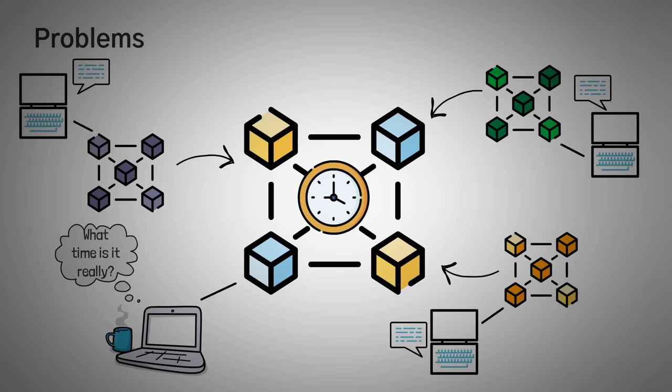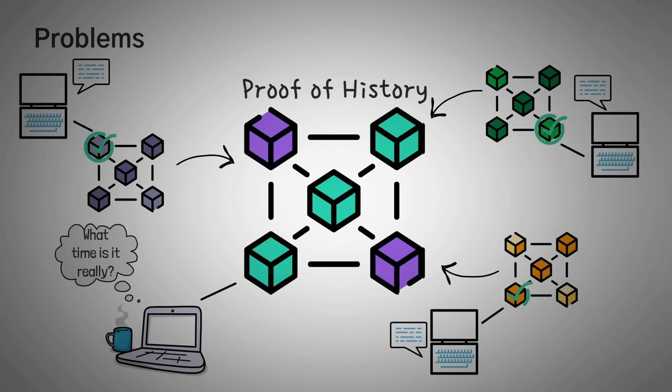Solana fixes this using proof of history to have everyone timestamp their blocks, and use a cryptographic proof so that they don't have to wait on everyone to agree on the time. Basically, we can agree on the organization of the data in the blocks after the fact, meaning we don't have to wait for other validators to check and approve our work.